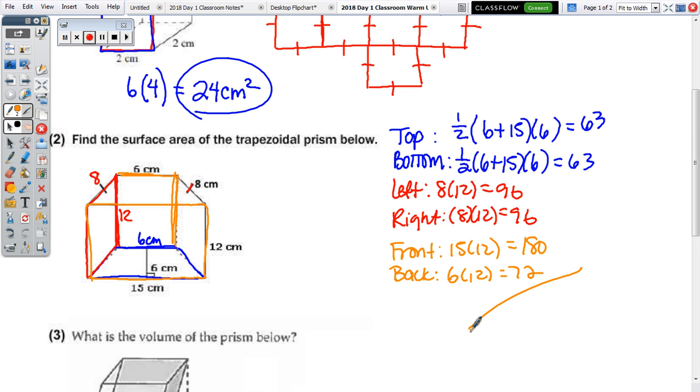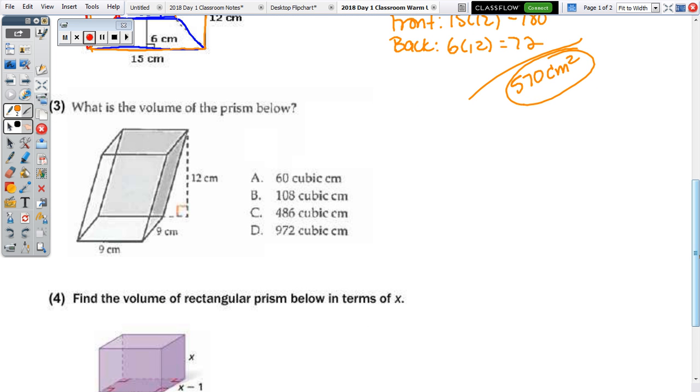So add all those surfaces together, and you get a total of 570 square centimeters. So you can use that formula if you're able to memorize it, but I would just encourage you to use that method. Find the area of all your faces, add them together.